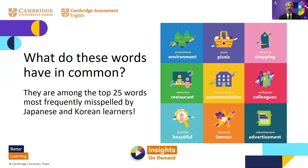This slide shows nine words that are among the top 25 misspelled words for both Japanese and Korean learners. Putting aside differences between British and American spelling, some words cause spelling problems because their pronunciation does not match their spelling — 'convenient' being a very clear example. Other typical problems arise with consonant clusters where the pronunciation itself may be difficult, impacting how learners spell the word. A commonly misspelled word is 'accommodation' — though native English speakers are not much better with that one either.